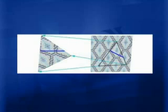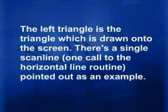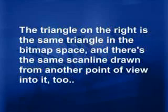At times perspective correction would be required here when mapping the bitmap onto the triangle. The left triangle is drawn onto the screen with a single scan line shown as an example (indicated by the blue line). The triangle on the right is the same triangle in the bitmap space, with the same scan line drawn from another point of view. The U and V coordinates define which part of the bitmap maps to which part of the triangle.